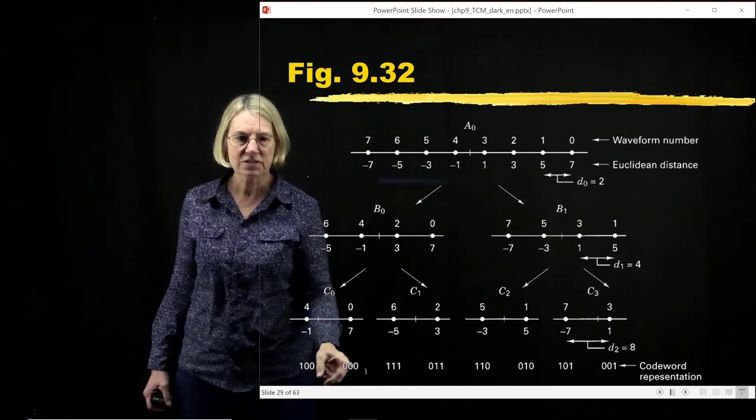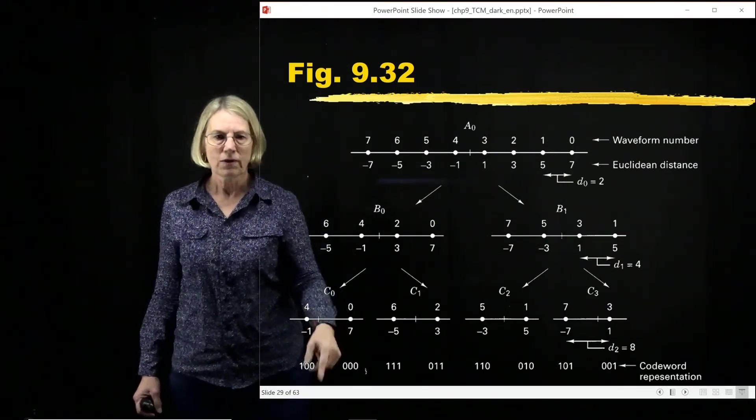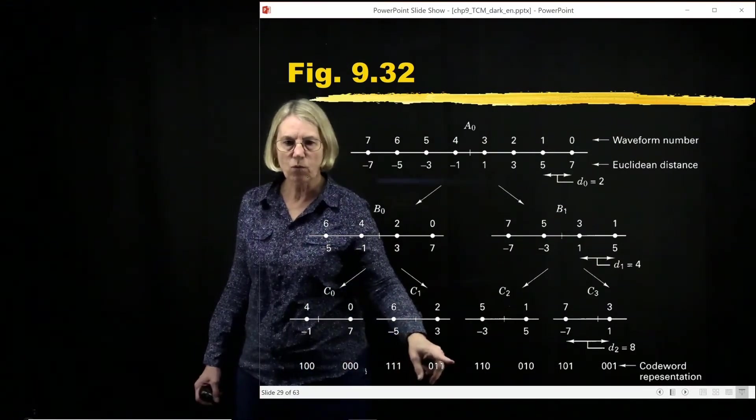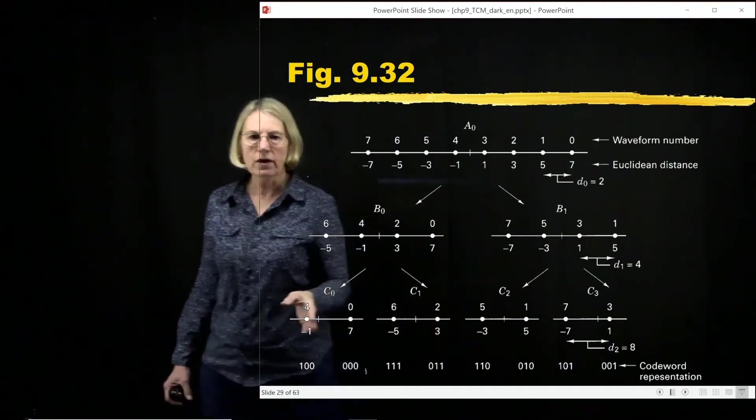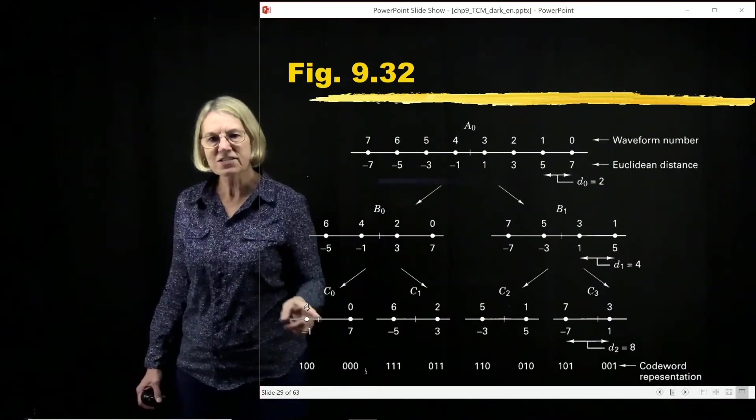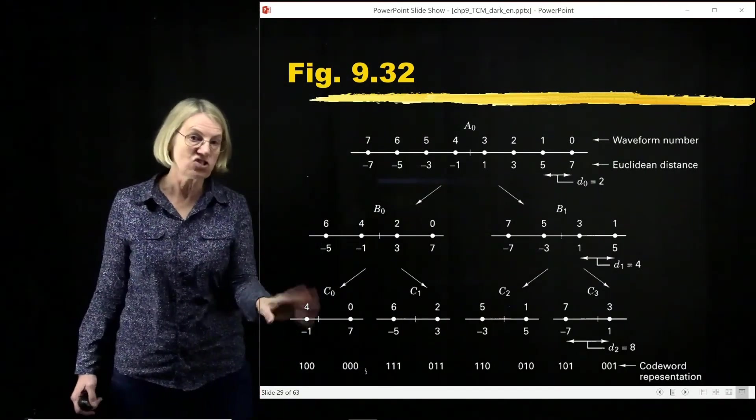Whenever I see the sequence 0, 0, 0, I know that I'm going to be transmitting amplitude 7. When I have the sequence 0, 1, 1, I'm going to be transmitting the amplitude 3. So each one of these sequences has associated with them the coordinates in the IQ plane. In this case, just I.